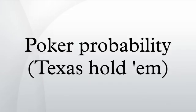When calculating probabilities for a card game such as Texas Hold'em, there are two basic approaches. The first approach is to determine the number of outcomes that satisfy the condition being evaluated and divide this by the total number of possible outcomes.